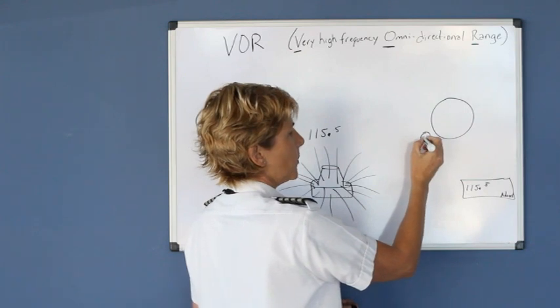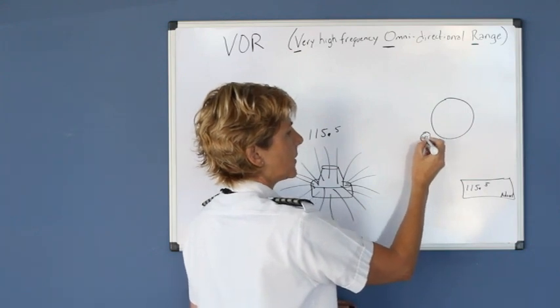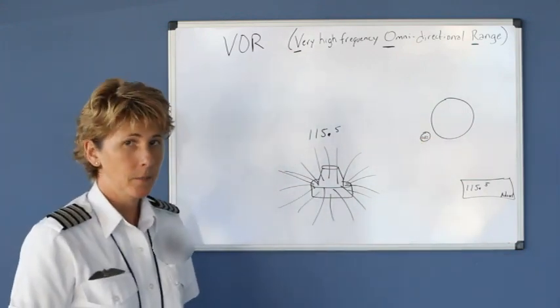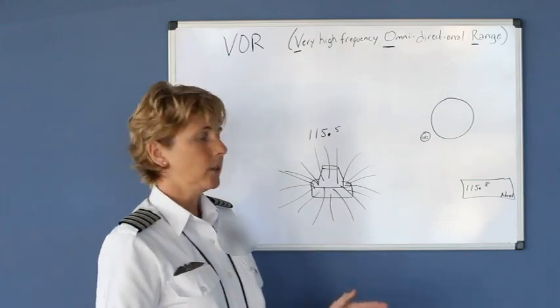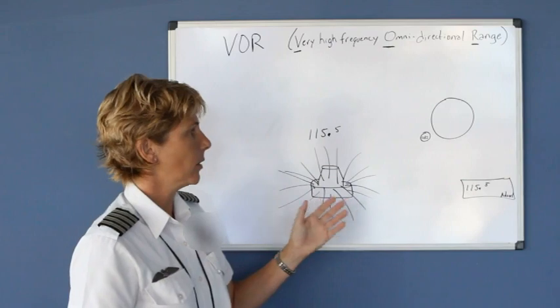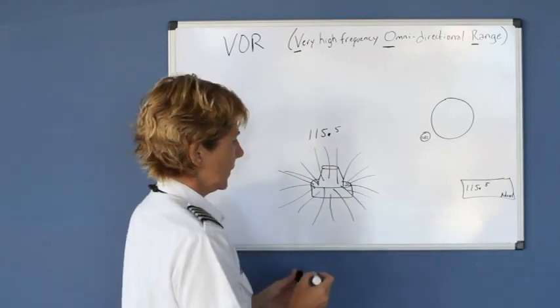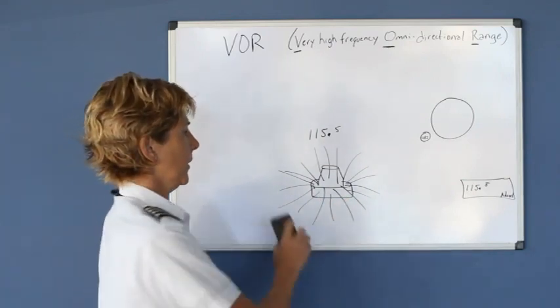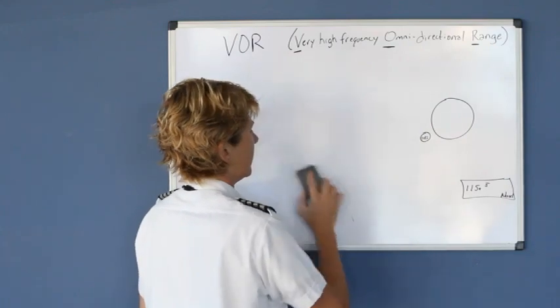Now on the knob, it says OBS. And OBS stands for omni, meaning multiple, bearing, we can choose many bearings, selector. So we're going to select the bearing that we want. And I'm going to erase this for a moment, and we'll look at an aerial view to help simplify this.